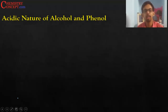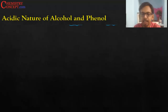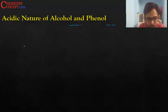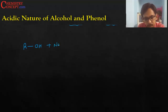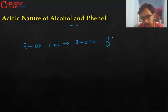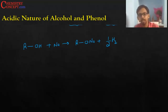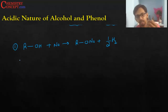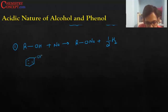Acidic nature of alcohol and phenol — both alcohols and phenols show some acidic behavior because of two reactions. Whenever an alcohol is reacted with sodium metal, it forms a sodium salt and hydrogen gas is produced. This is a property of acids: acids react with metal to produce hydrogen gas, so this gives us some idea that alcohol has acidic nature.